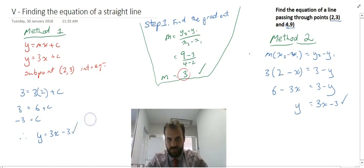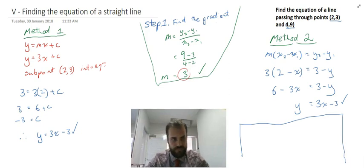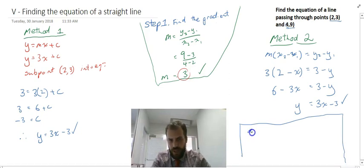You can see I've used two different methods to come to the answer. Now the last thing I'll say here is that sometimes you'll be asked to write it in this form, y equals 3x minus 3, but there is a second form you might get asked to write it in. You might get asked to write it in ax plus by plus c equals 0 form, so everything goes over on one side and you're left with a 0 on the right hand side.